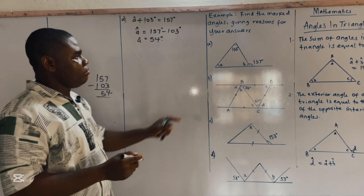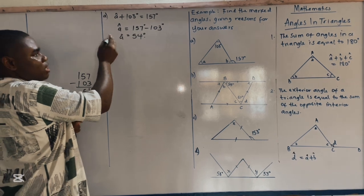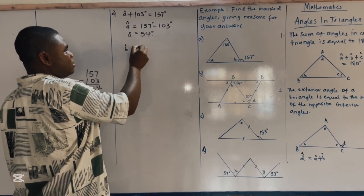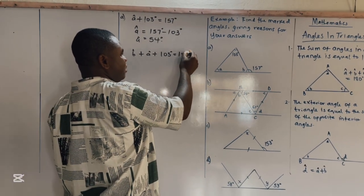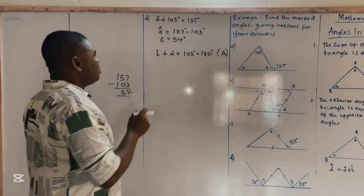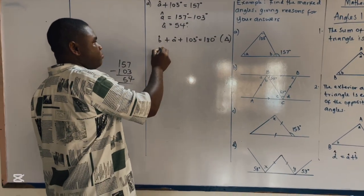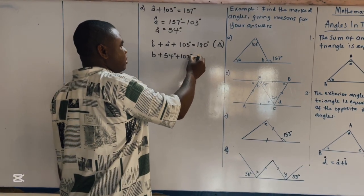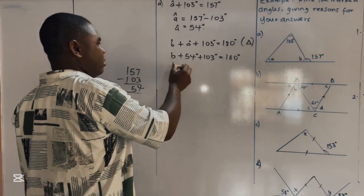Now to find B, don't forget that the sum of angles in a triangle is equal to 180 degrees. So to calculate angle B, angle B plus angle A plus 103 degrees equals 180 degrees. From our first answer, A is 54 degrees, so B plus 54 degrees plus 103 degrees equals 180 degrees.